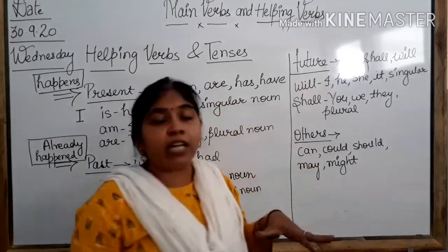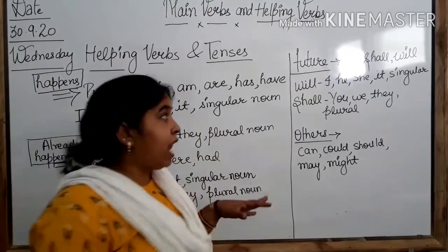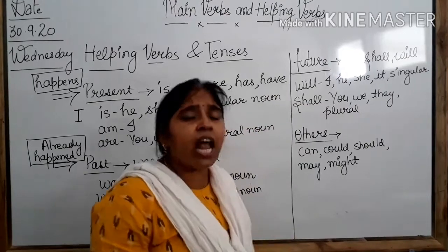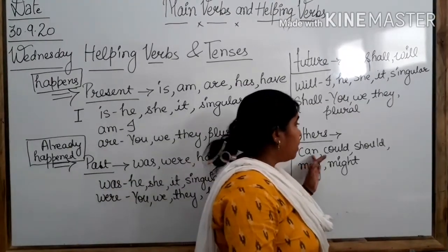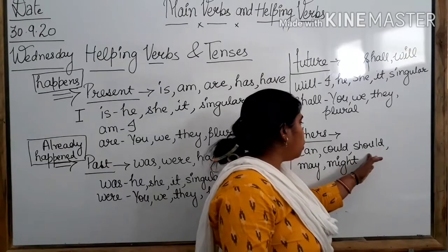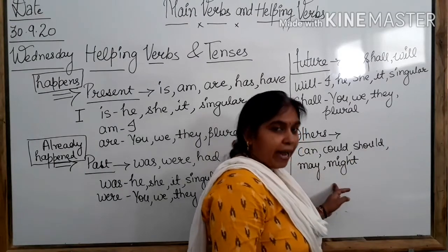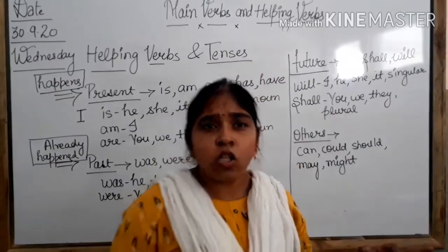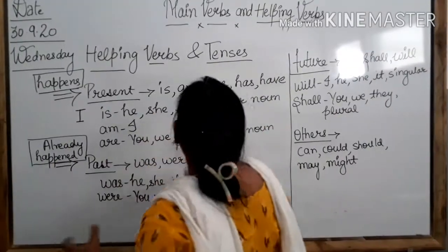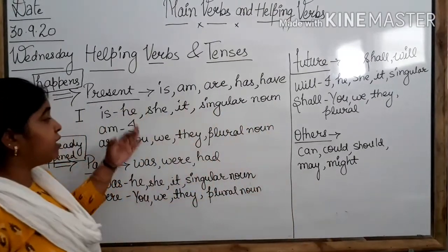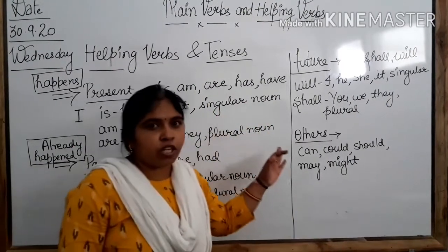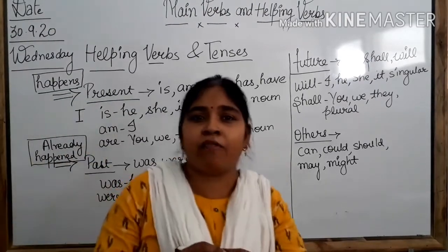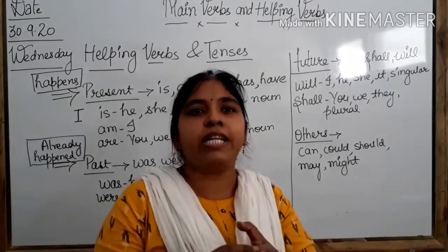So to make a sentence of future tense, we will use the helping verbs 'will' and 'shall.' Now we have other helping verbs also: can, could, should, may, might. These are also helping verbs with the help of which we can make sentences. So in this manner, we have learnt about some helping verbs of present, past and future. Now students, we will learn about two or three more helping verbs: do, does and did.